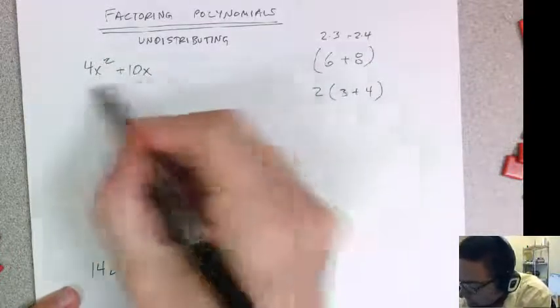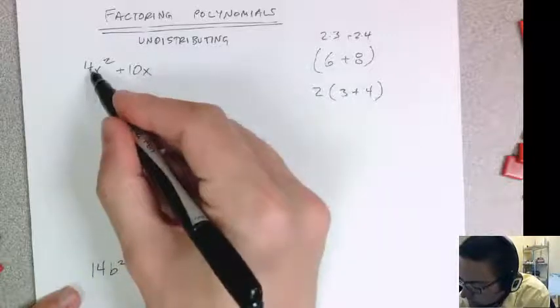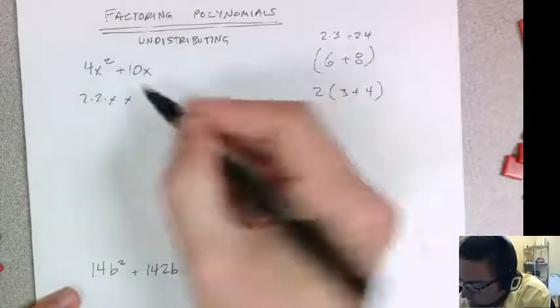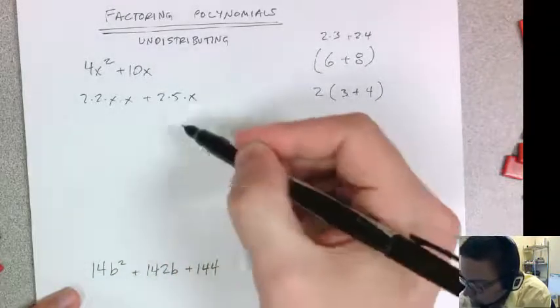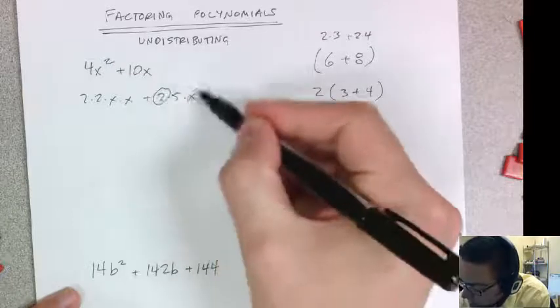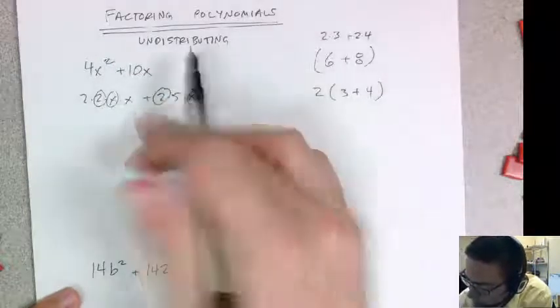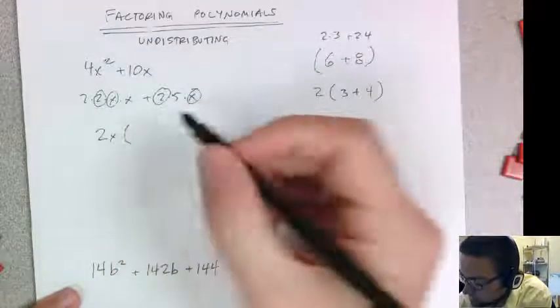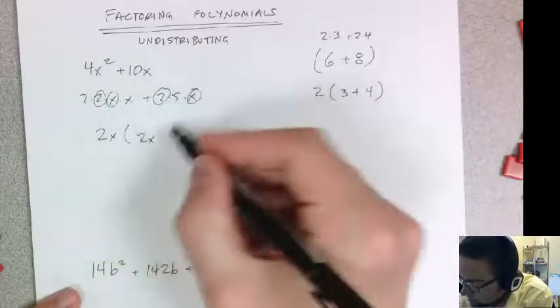So if I find the greatest common factor of these two numbers, it would be, well, I could take a, this is 2 times 2 times x times x, right? And this is 2 times 5 times x. So the biggest thing I could take out of everything is a 2x. So I could take a 2x out of this term and a 2x out of this term, and then everything that gets left over stays inside the parentheses. So it would be 2x plus 5.